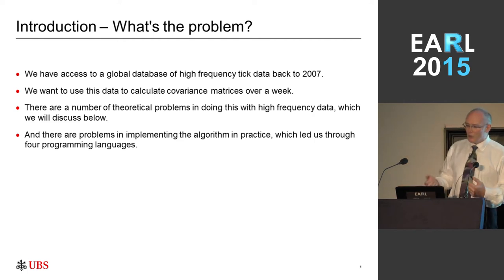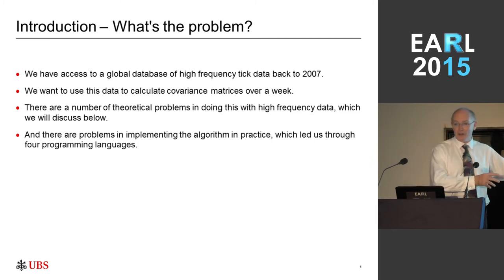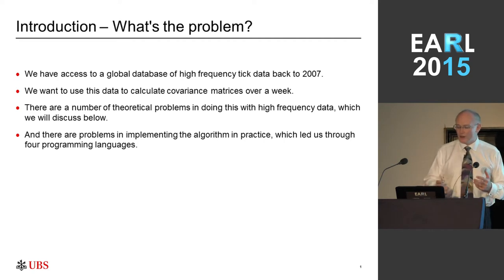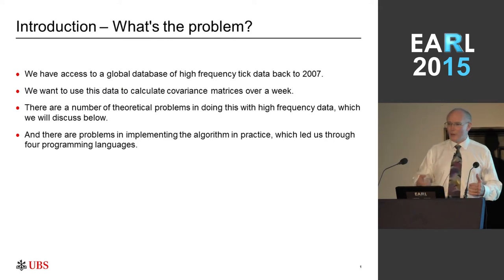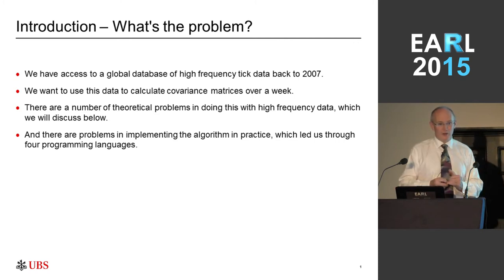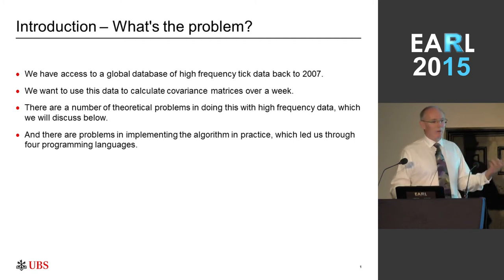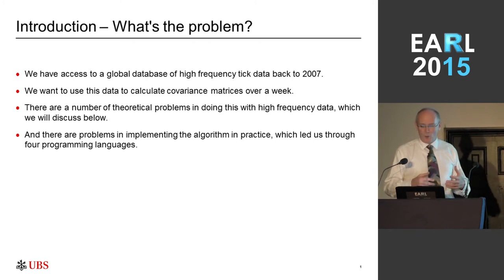Now this sounds like a really easy problem — just take a bunch of numbers, convert them to returns, and calculate covariances. But it doesn't work like that. There are a lot of theoretical problems, and then we come to the second half of this, which is actually how we implemented this in practice. Because effectively, we went through at least four programming languages — five if you include a slight detour — to actually come up with something we could use effectively in production, running every single weekend.